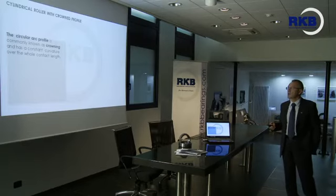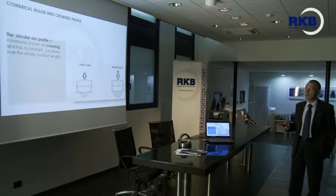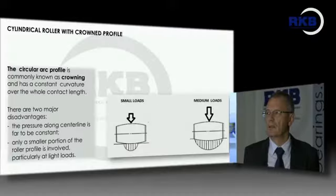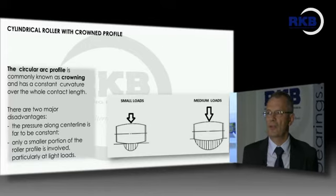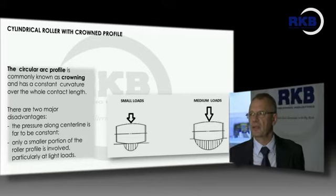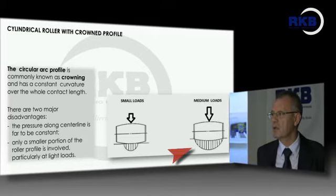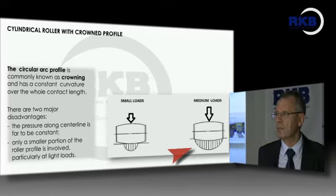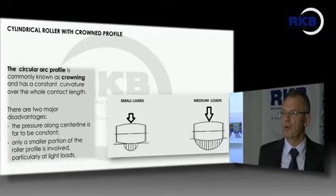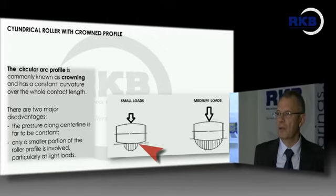The circular profile, commonly known as crowning, has a constant curvature over the entire contact length. There are two major disadvantages: the pressure along the centerline is far from constant, and a smaller portion of the roller is involved in the contact, particularly at light loads.